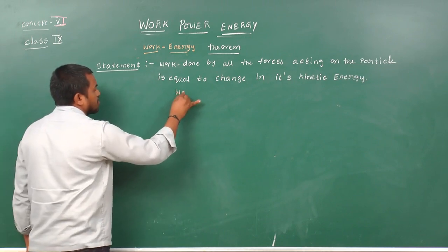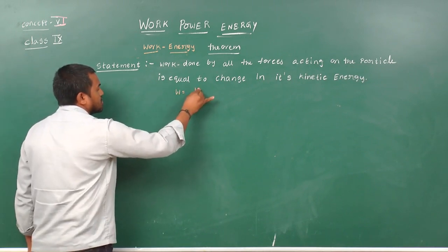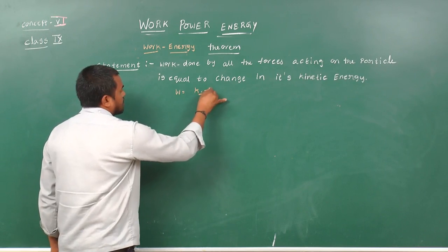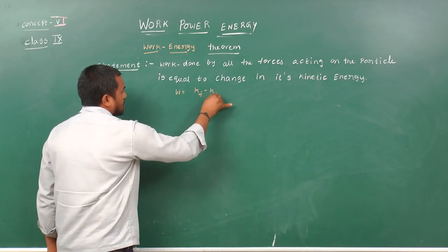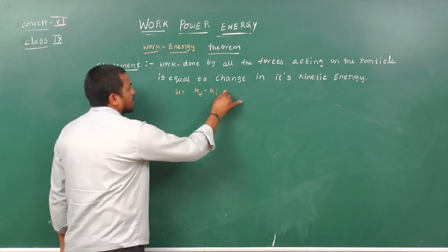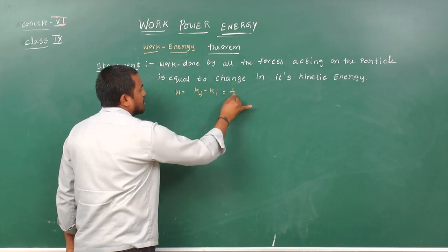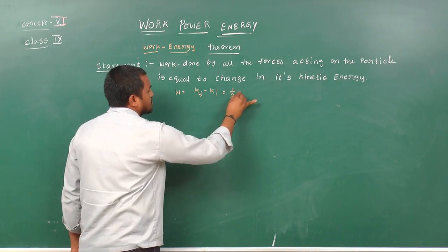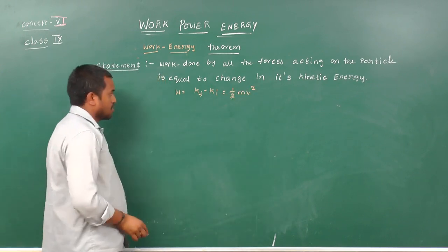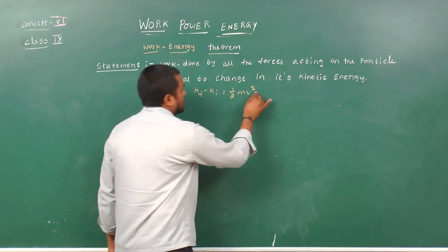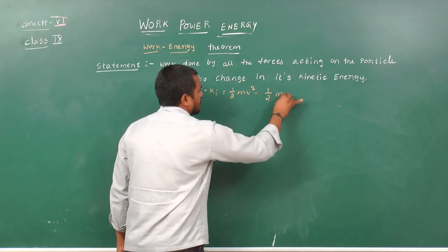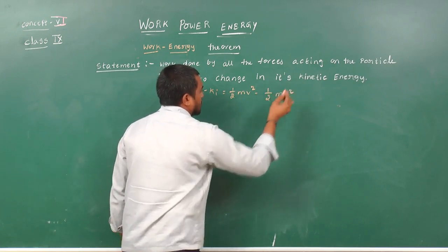Work done is equal to final kinetic energy minus initial kinetic energy. That is, one-half M v squared minus one-half M u squared.